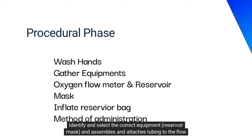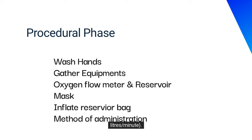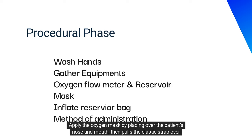Identify and select the correct equipment — the reservoir mask — and assemble and attach the tubing to the flow meter. Turn the oxygen flow meter on, selecting the correct flow rate of 15 litres per minute. Cover the one-way valve with fingers until the reservoir bag is fully inflated.